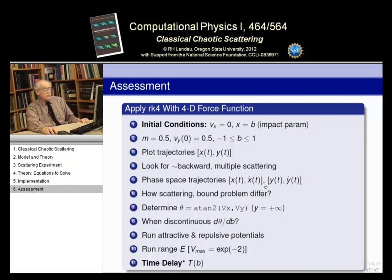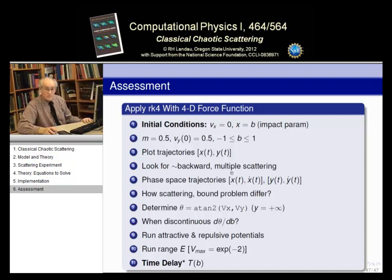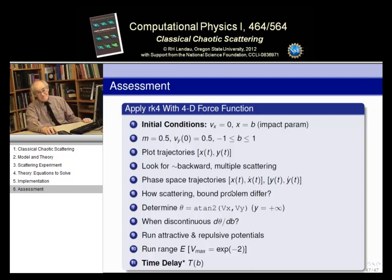Also look at phase space — remember phase space from when we did the pendulum? The phase space orbits for pendula and harmonic oscillators were ellipse-like figures. Here, phase space (x as a function of time and x-velocity as a function of time) will not be like bound states which are like the planets; these will be like the comets — open figures, parabola-like or hyperbola-like. That's how scattering and bound states differ: one has open orbits, the other closed orbits. Just give it enough energy and you can't get bound.